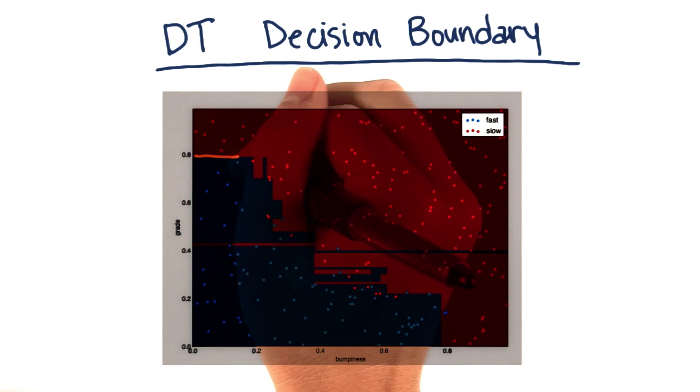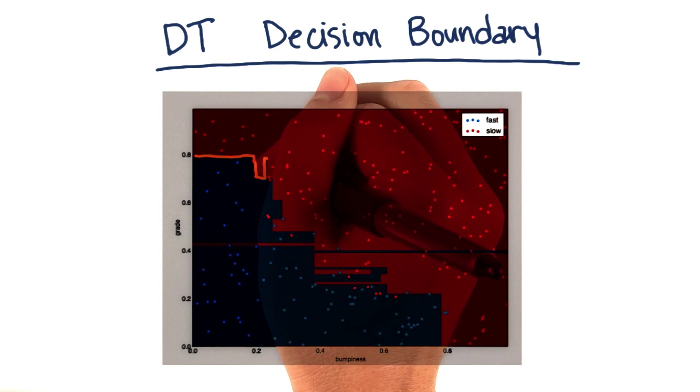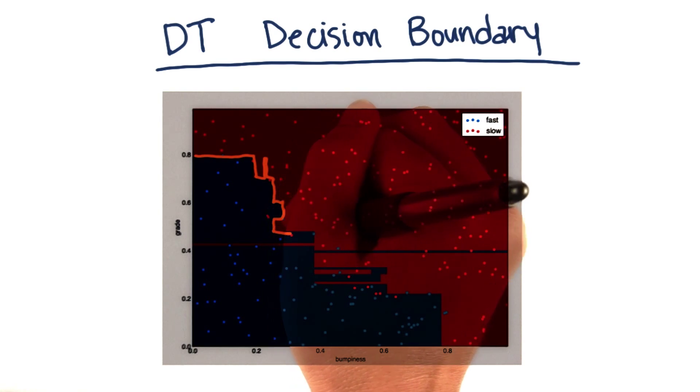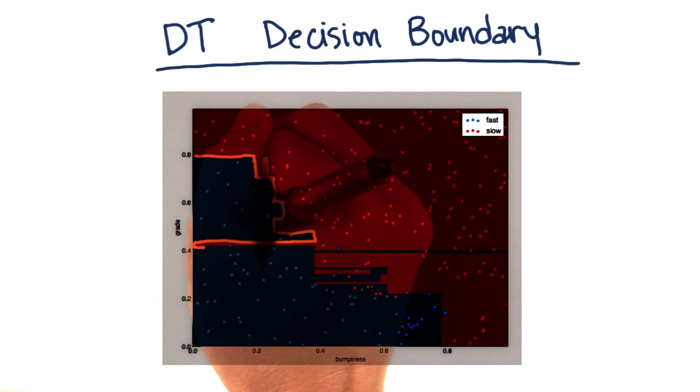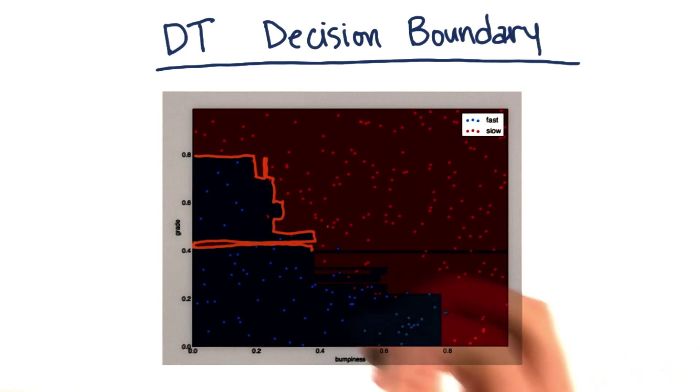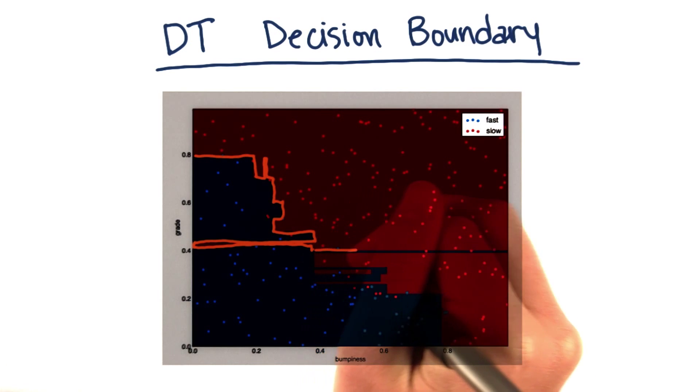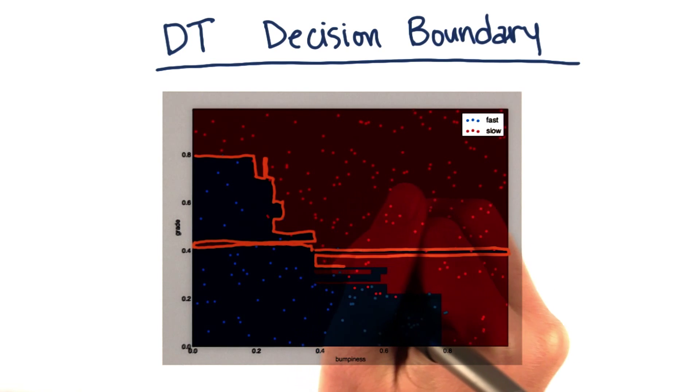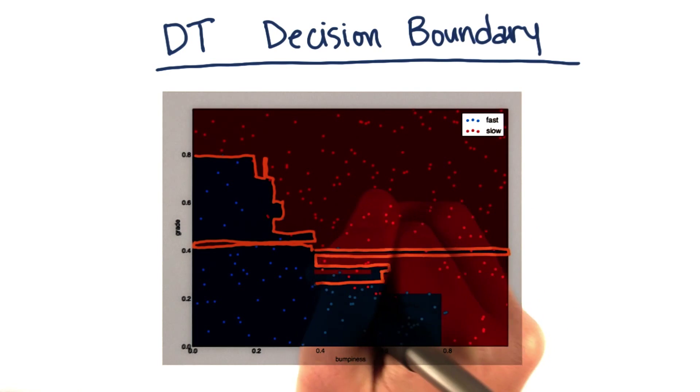You get all these jagged little lines. It almost looks like a piece of modern art or something. It's carving out all these horizontal and vertical cuts that it makes because of the structure of the decision tree where it's running around trying to slice the boundary in such a way that it can get as many points as it can in the training set.